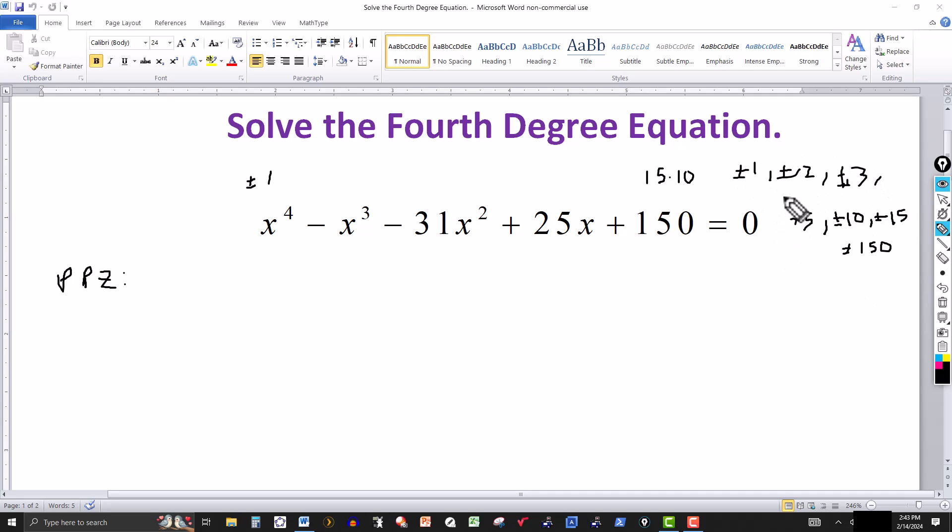So we could try say 1 or negative 1, put it where the x is. Does it give you 0? That's clear it's not going to give you 0. Then you plug in 2 for x, does it give you 0? If it does, it's going to be a zero of the polynomial, which will also be a solution to the equation. But it's not.